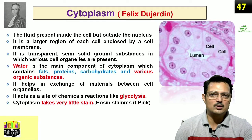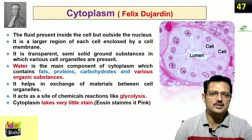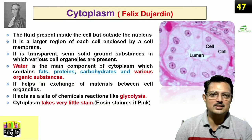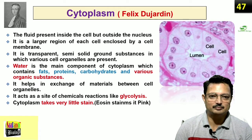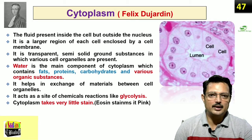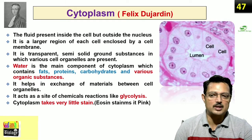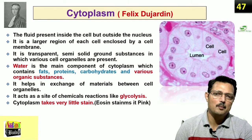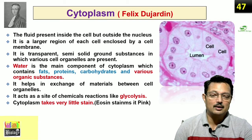Today we will talk about basic cytoplasm. If you stain a cell — you might have stained the onion peel — when you use a stain like eosin, the nucleus is darkly stained whereas the cytoplasm is lightly stained; it stains light pink. As far as the components are concerned, cytoplasm contains fat, protein, carbohydrate, and various organic substances. It is generally semi-solid and holds many different cell organelles.